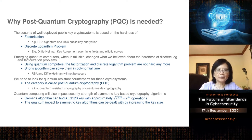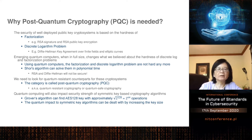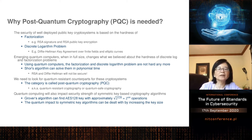However, with quantum computers, the problems of integer factorization and the discrete log problem are not hard anymore. By Shor's algorithm, these problems can be solved in polynomial time. That means RSA is not secure and Diffie-Hellman key agreement is not secure anymore. We need something new — this new category is called Post-Quantum Cryptography.